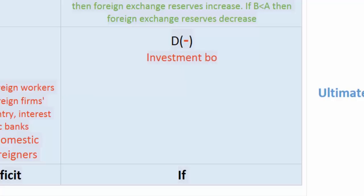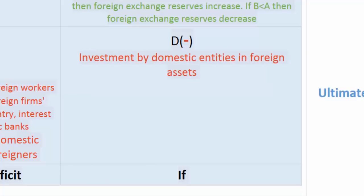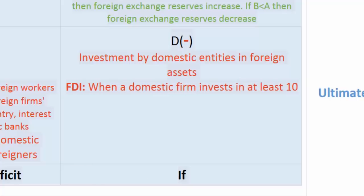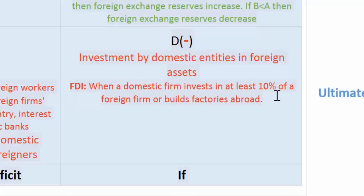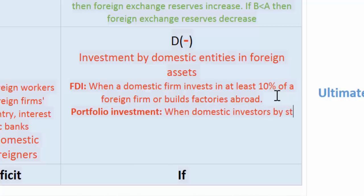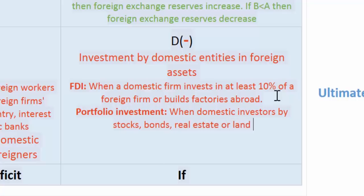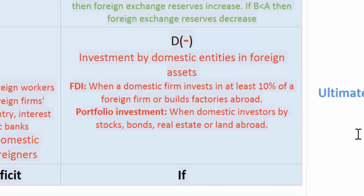Investment by domestic entities in foreign assets will be counted as a negative in the financial account, because money will be leaving the country in order to acquire foreign assets. This includes FDI when a domestic firm invests in at least ten percent of a foreign firm or builds factories abroad. Portfolio investment is also included here — this is when domestic investors buy stocks, bonds, real estate, or land abroad. The acquisition of foreign assets, whether government bonds, corporate bonds, stocks, or real estate, all leads to a leakage of money from the nation's economy and is recorded as a negative in the financial account balance.